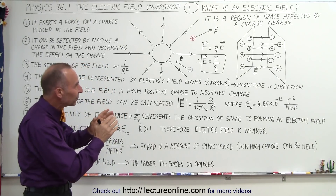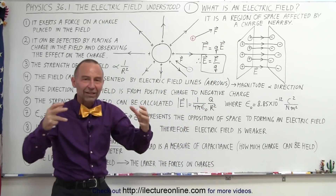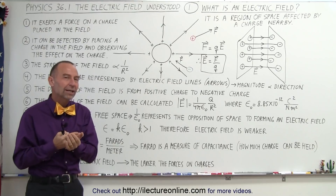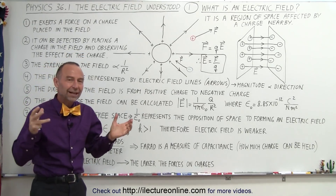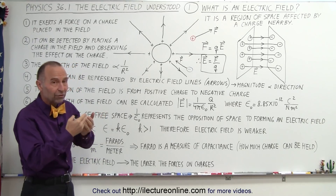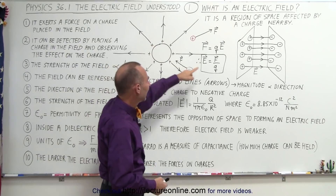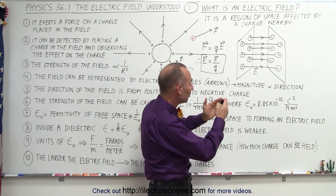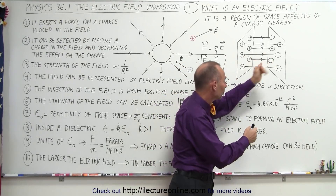An electric field is a region of space affected by a nearby charge. We're going to go through a series of descriptions that help us understand what an electric field is. Essentially, an electric field starts at a positive charge and ends at a negative charge, so the direction of the field is always directed from positive charge to negative charge.